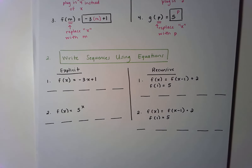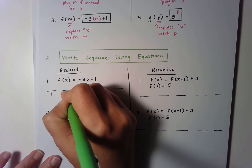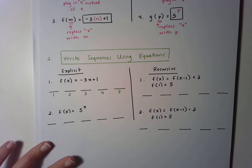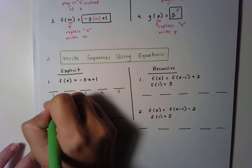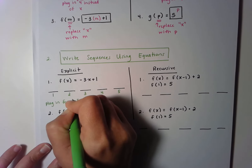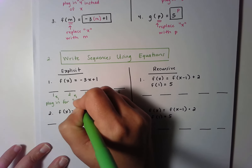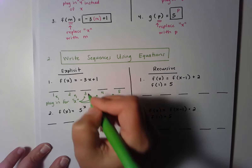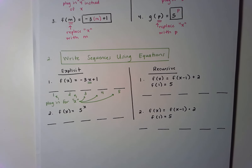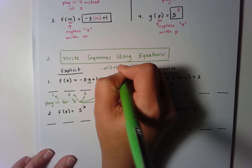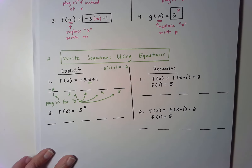Let's start with how we do this with explicit equations. Step number 1 is to label the terms: term number 1, 2, 3, 4, and 5. In order to find the actual value of the terms, we're just going to plug these numbers in for x in the equation. So we plug in 1, then 2, then 3, then 4, then 5. If I plug in the number 1, I get negative 3 times 1 plus 1, which gives me negative 2. So my first term is negative 2.